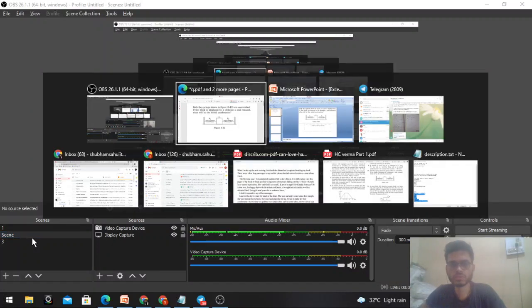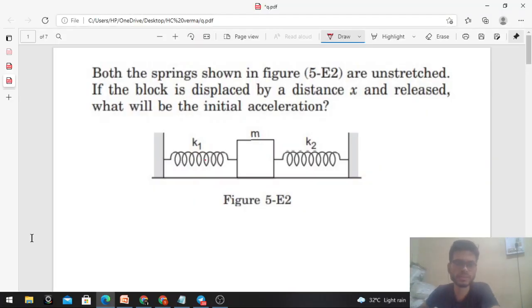Hi everyone, today we will discuss one interesting problem from H.C. Verma and then we will do some general things about this. The problem states: both the springs shown in figure are unstretched. If the block is displaced by a distance x and released, what will be the initial acceleration?